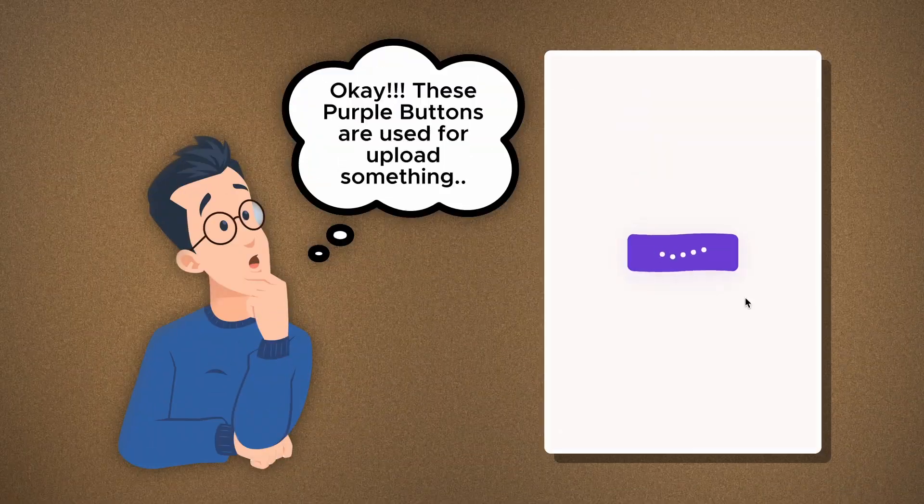Today you will see all the big design companies and teams using design systems. That is why we have design systems in place — because if we define how our heading looks, how our primary button looks, how our secondary button looks, and continue to use it across the ecosystem, people automatically start expecting that this button is supposed to work in a certain way.